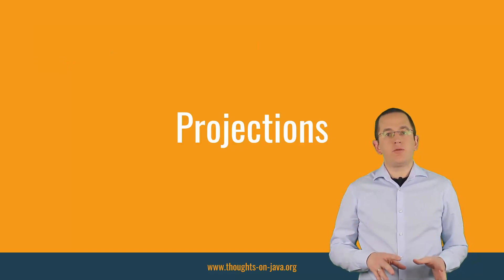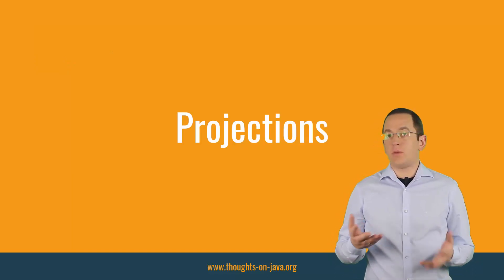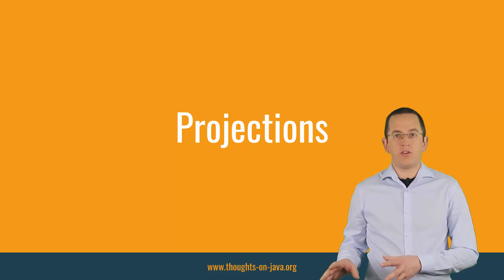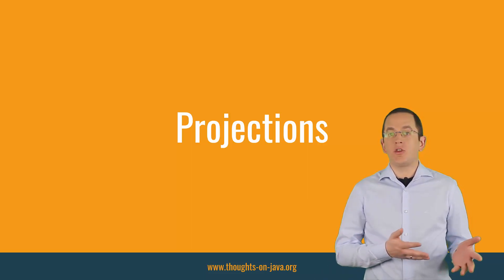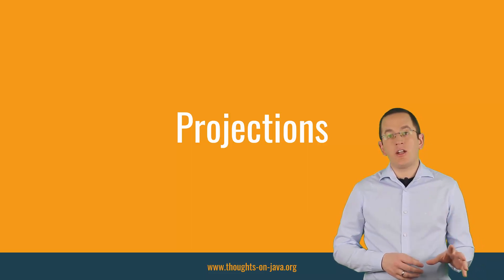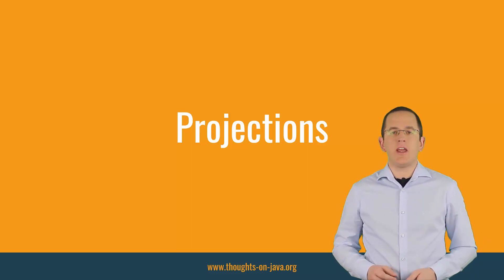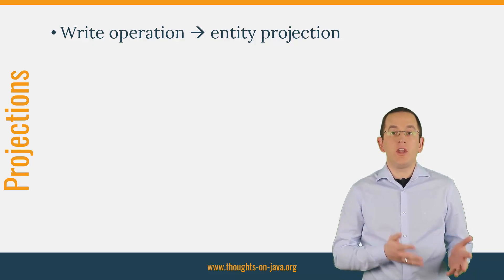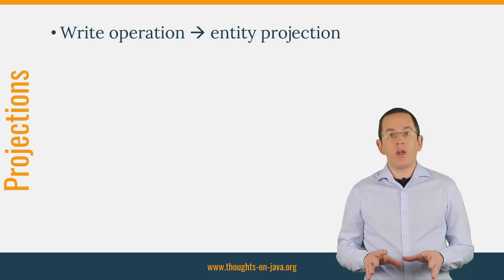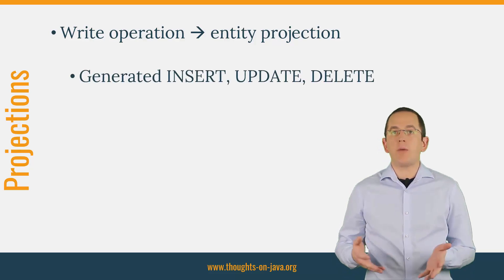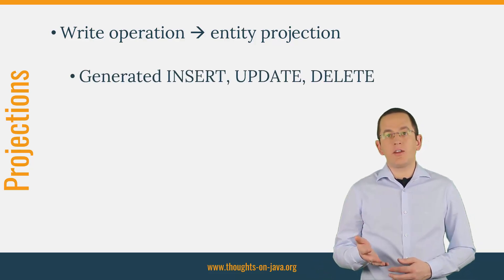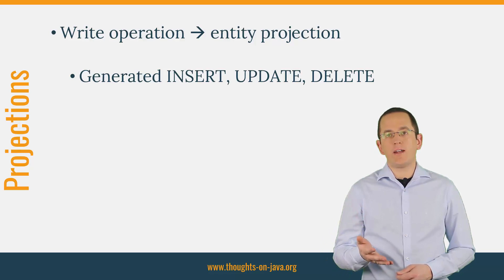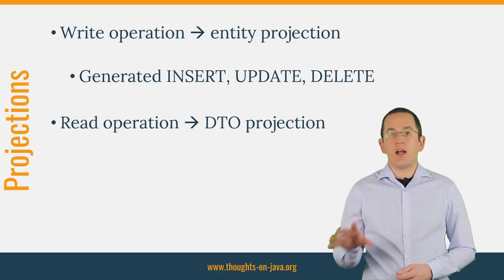For most teams, entity projections are the most commonly used ones, but that's often not the best approach. Entities might be easy to use and are the best fit for all write operations, but selecting and managing an entity creates an overhead that slows down your application. So if you need to optimize your persistence layer for performance, you should only use entity projections if you need them to implement write operations. In these situations, the persistence provider generates SQL insert, update, and delete statements based on the entity lifecycle state transitions, which makes implementation easier and is worth the overhead. For all other use cases, you should prefer scalar or DTO projections.